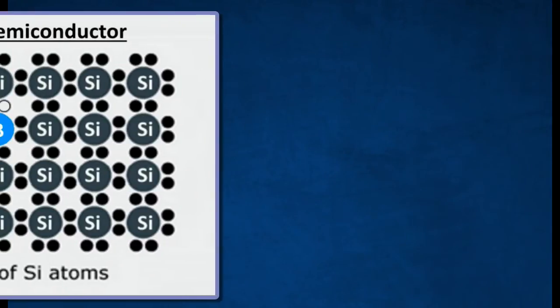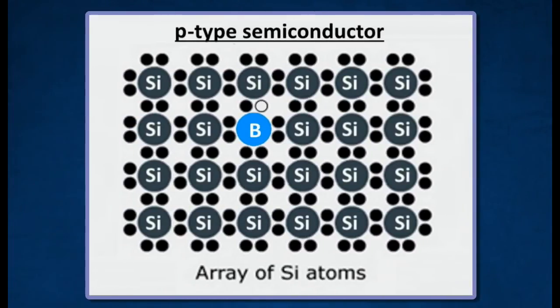If atoms with three valence electrons or trivalent atoms such as boron, gallium or indium are doped into silicon, there is a deficiency of one electron after every four valence bonds are formed.